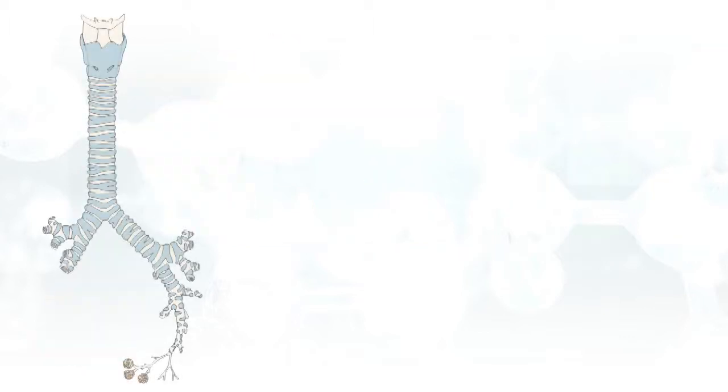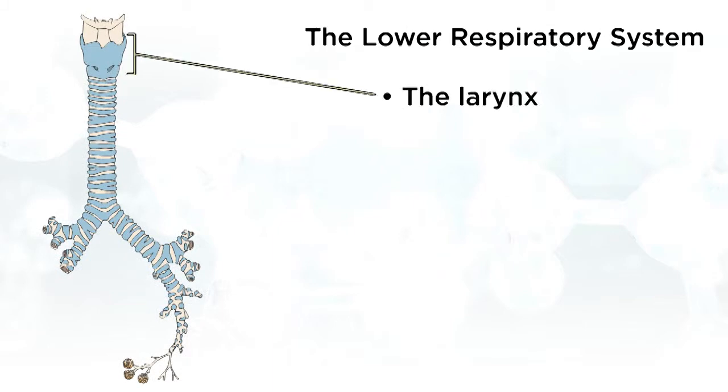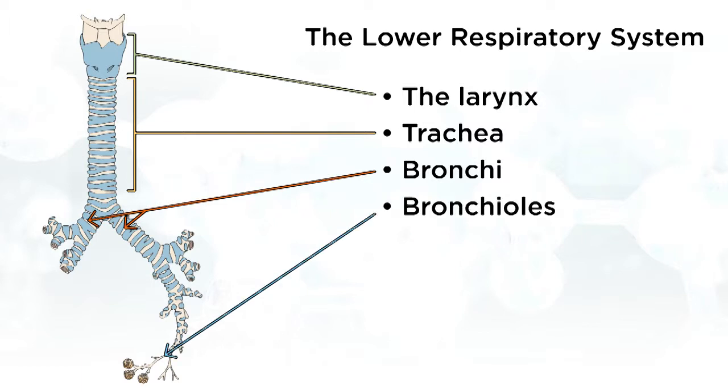The lower respiratory system consists of the larynx, trachea, bronchi, bronchioles, smallest bronchioles, and the alveoli.